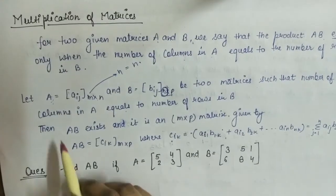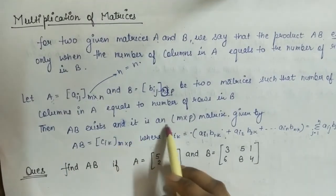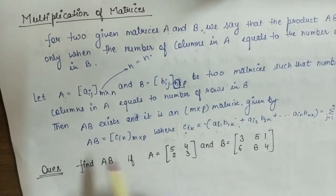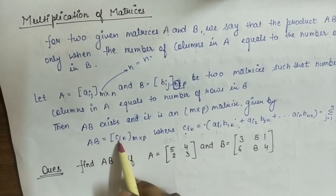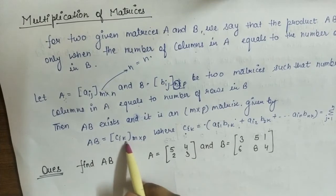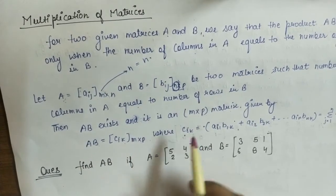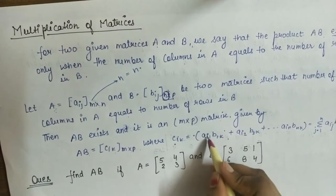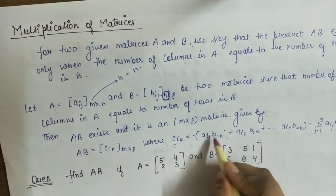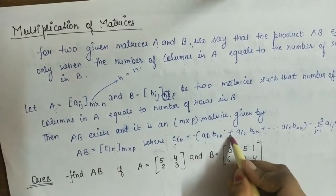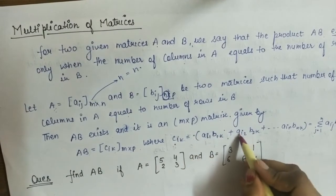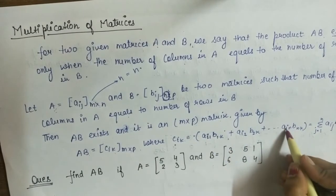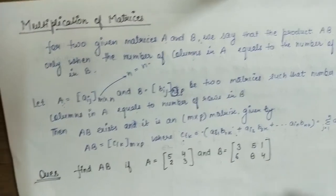Then AB exists and it is an M×P matrix given by AB = [C_ik] of order M×P, where C_ik = A_i1·B_1k + A_i2·B_2k + ... + A_iN·B_Nk.